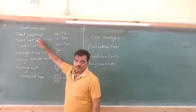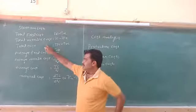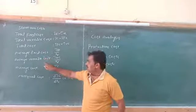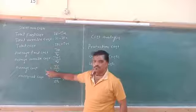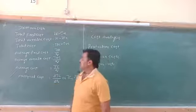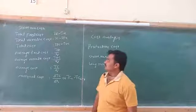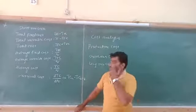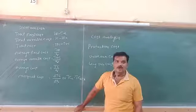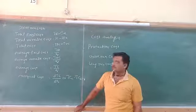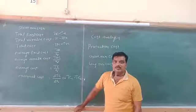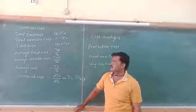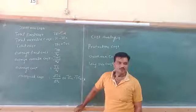The seven short-run costs are: Total Fixed Cost (TFC), Total Variable Cost (TVC), Total Cost (TC), Average Fixed Cost (AFC), Average Variable Cost (AVC), Average Cost (AC), and Marginal Cost. Total Fixed Cost means those costs which are fixed at all levels of output. As the level of output increases, the cost remains constant — it does not decrease or increase. These are called fixed costs.